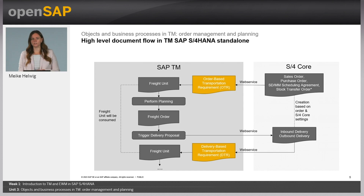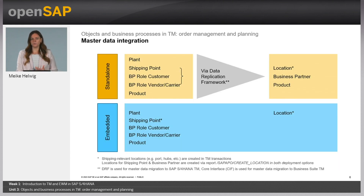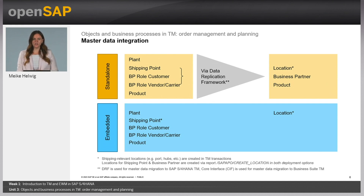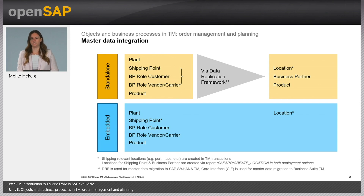We can simply work directly on the sales order or the purchase order. For this integration, you need master data in SAP TM. In an embedded world, it's quite easy because you can reuse the data from S/4HANA — you can reuse the plants, the shipping points, the business partners like the customer and vendor, or the product materials. You don't have to do anything except create locations in TM based on them. We work with the transportation network in TM and therefore we need locations — the real addresses of these objects from S/4HANA. If you are in a standalone scenario where TM is next to your S/4HANA core, you have to replicate this data using the data replication framework.